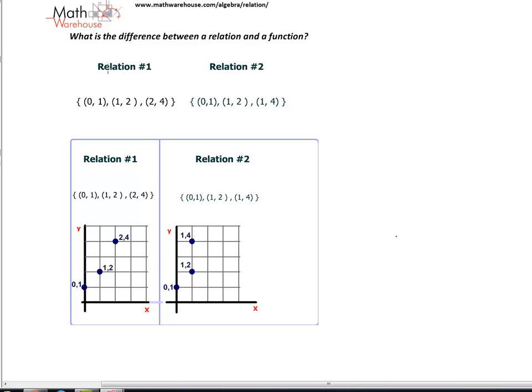Now I'd like us to look at two relations. Relation 1 on the left is (0,1), (1,2), (2,4), which I also graphed out: 0,1, 1,2, 2,4, and relation number 2. The only difference between relation 1 and 2 is the x value of, or the domain value here of this third item, this third item in our relation.